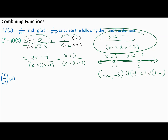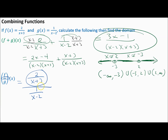For F divided by G of X, place F of X — 2 over (x plus 3) — in the numerator and G of X — 1 over (x minus 2) — in the denominator. This creates a complex fraction. When dividing a fraction by another fraction, you invert the denominator and multiply — multiply by the reciprocal.